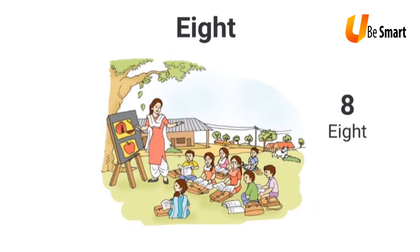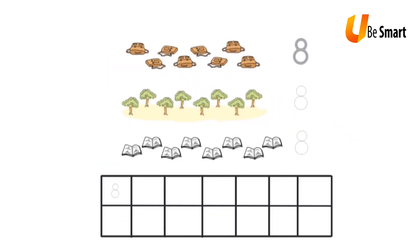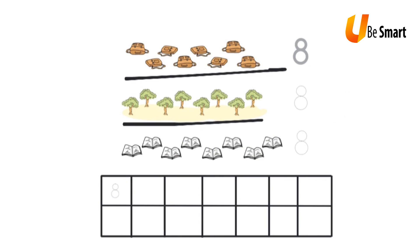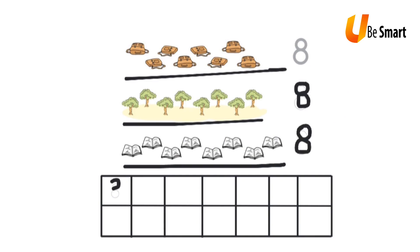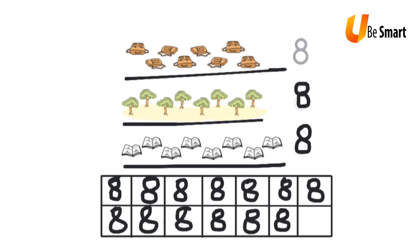In this picture, I see 1, 2, 3, 4, 5, 6, 7, and 8 trees. I also see 1, 2, 3, 4, 5, 6, 7, and 8 books. And I also see 1, 2, 3, 4, 5, 6, 7, and 8 school bags. So there are 8 bags, 8 trees, and 8 books. I write the number 8 along these dotted lines like this, and I also write the number in each of the boxes below.